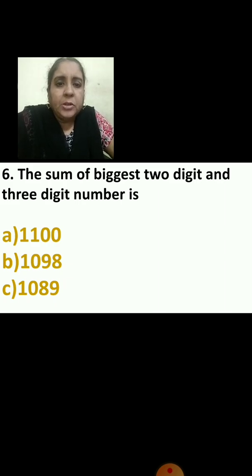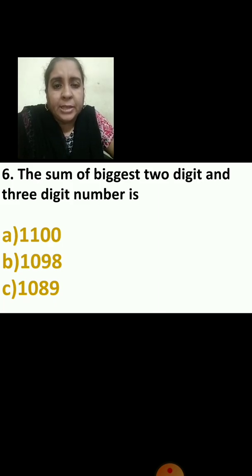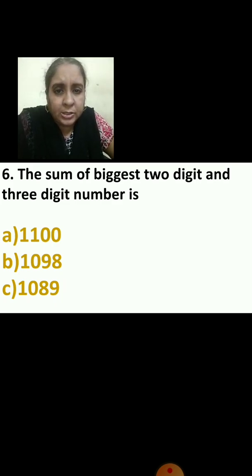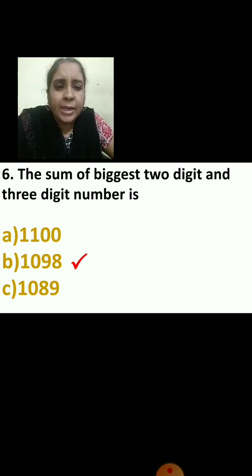Now let us see the 6th question: the sum of the biggest 2-digit and 3-digit number is dash. You know which is the biggest 2-digit number? 99. Which is the biggest 3-digit number? 999. You have to add these two numbers. When we say sum, sum means you have to add. Your answer is 1,098.